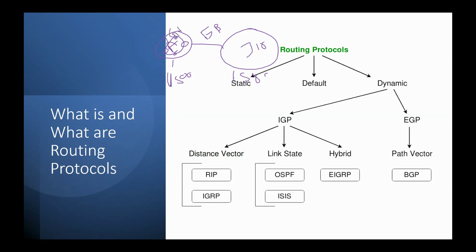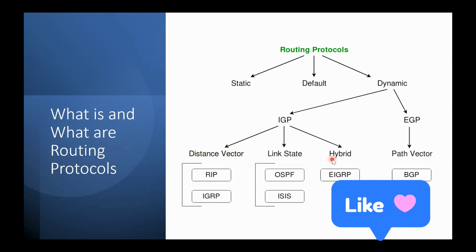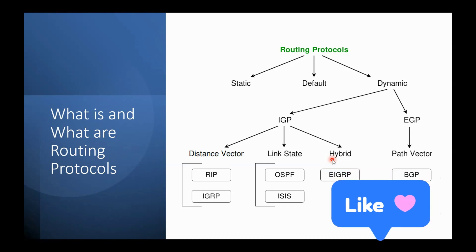So far we have covered static routing, default routing, and dynamic routing. Under dynamic, we discussed IGP and EGP subcategories, and within IGP: distance vector, link state, and hybrid protocols. If you have any doubts related to this topic, please feel free to write in the comments. Please like the video and stay tuned. Thank you.